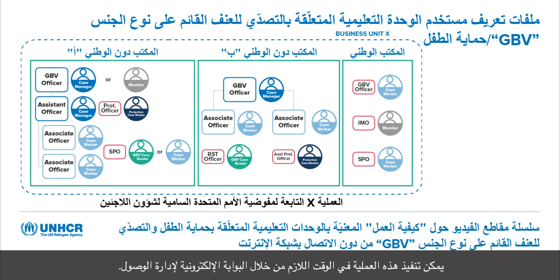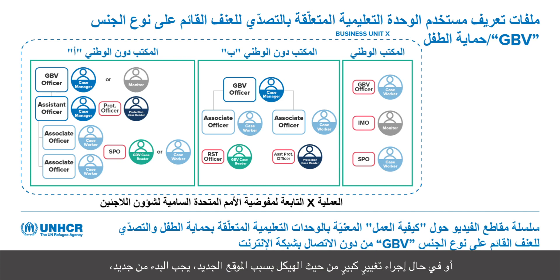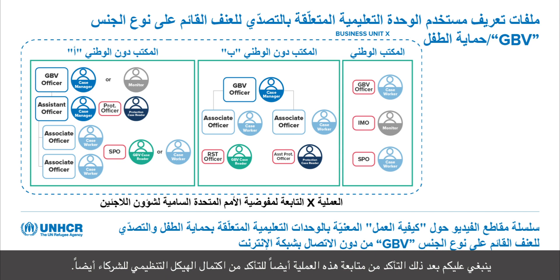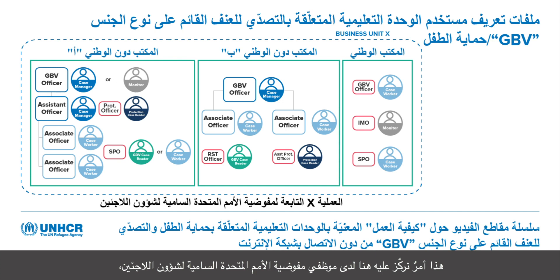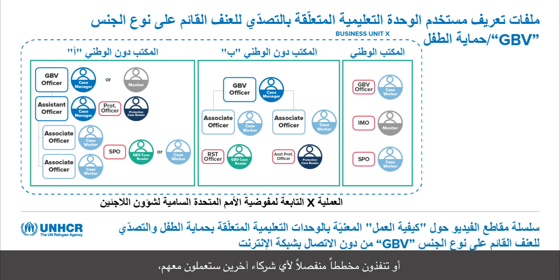The super user functionality is a system admin role requiring significant time for admin work such as transferring cases, so careful consideration should be given to who would be best placed to serve this role when needed. This can be done through the AMP portal. After completing the three steps of initial mapping — direct staff, linked service providers, and reporting/monitoring roles — you have a completed organogram. This process should be done at initial implementation of GBV or child protection modules, or when there are significant structural changes, new locations, significant staff turnover, or when starting with a new partner.